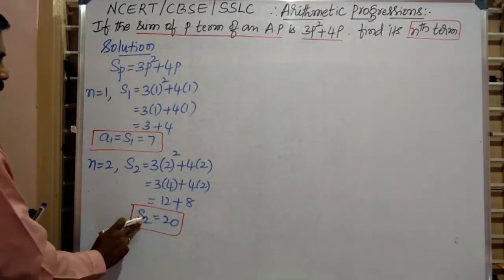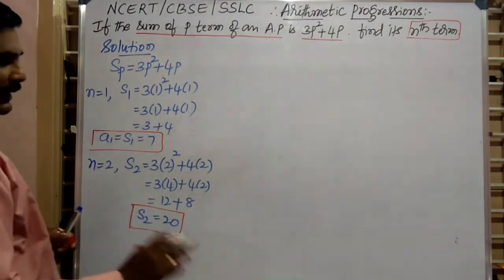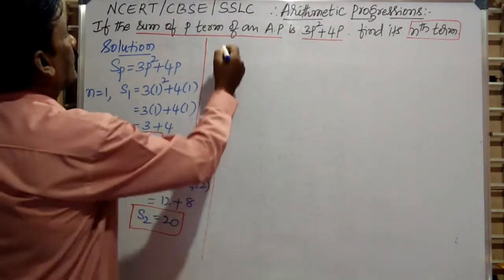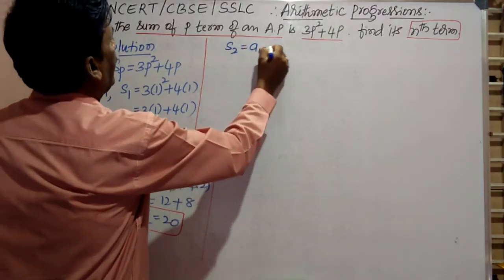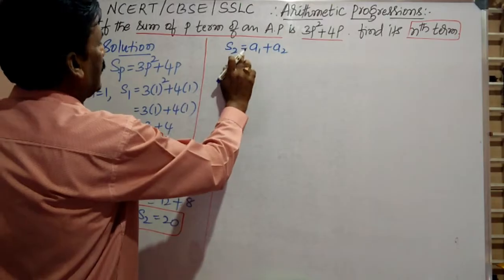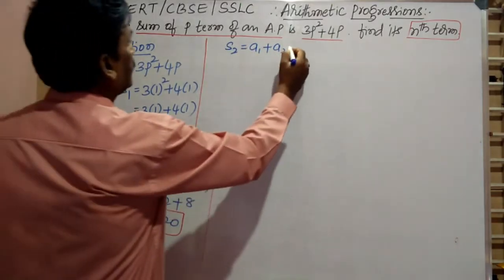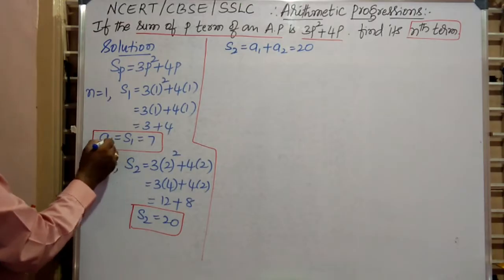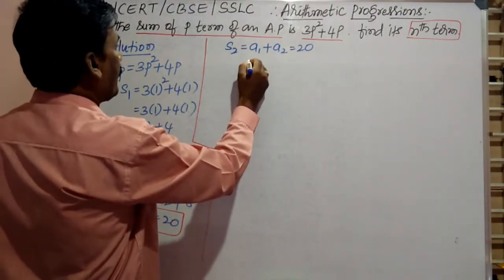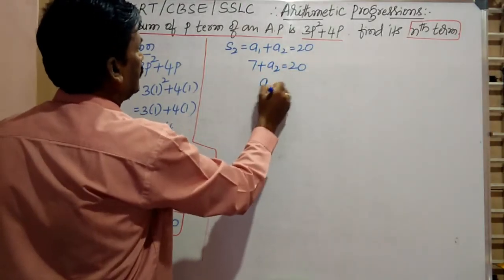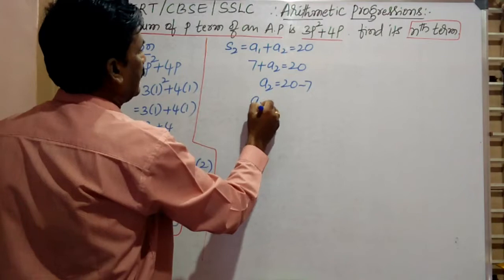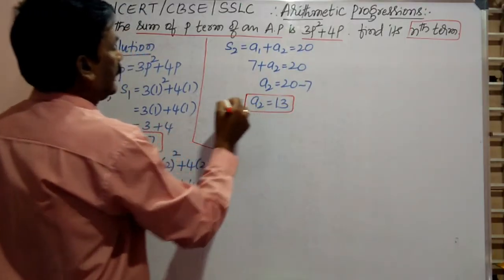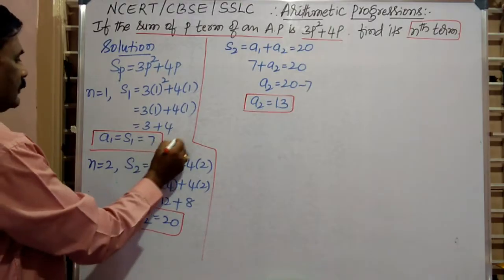With the help of the sum of two terms, we have to find A2, the second term. S2 is equal to A1 plus A2; the sum of the first two terms equals the first term plus the second term, that is equal to 20. A1 is already found. So 7 plus A2 is equal to 20. A2 is equal to 20 minus 7, that is A2 is equal to 13. So now we get the second term: second term is 13 and first term is 7.